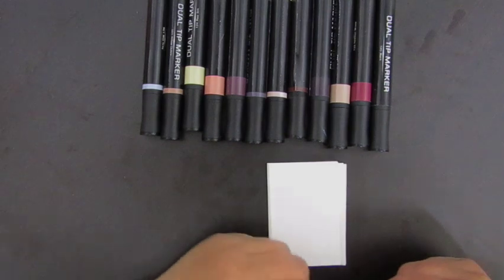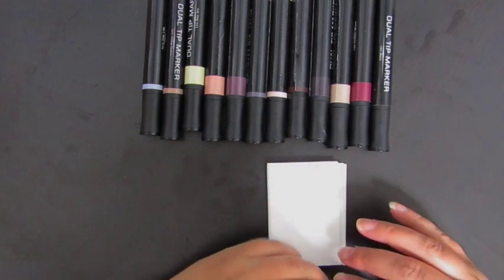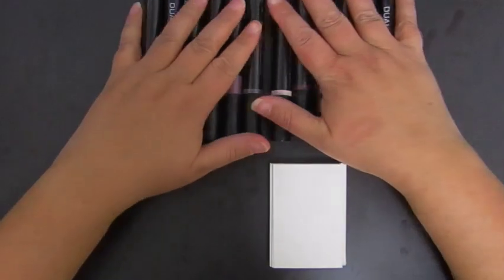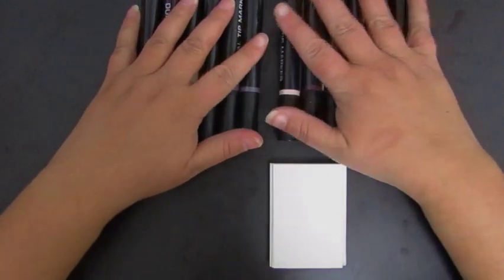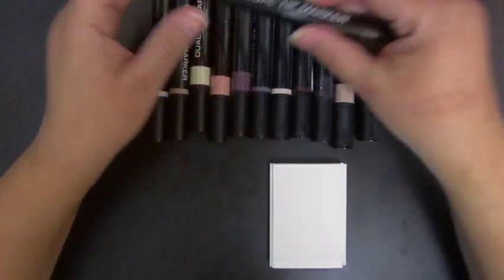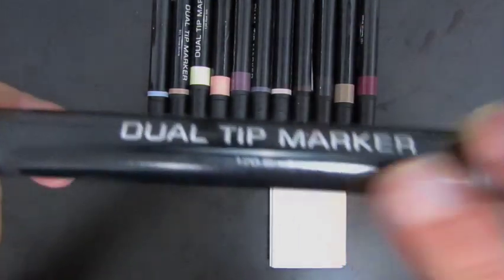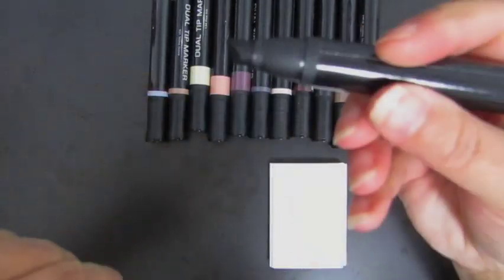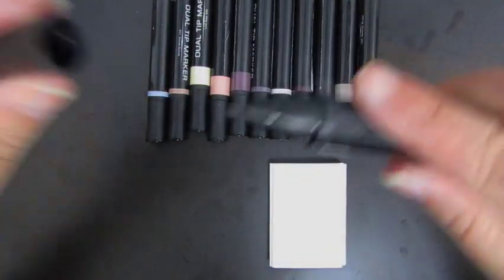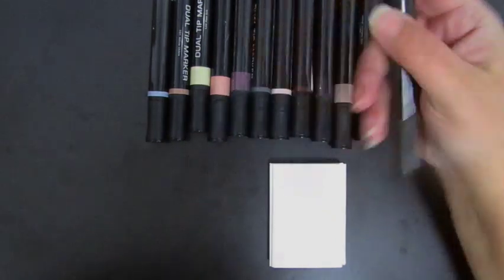Welcome back to my channel. Today I'm going to be swatching another set of markers that I picked up at Five Below. These are alcohol markers, dual tip. They do have a color number and a name on the barrel. They are bull tip and fine tip and they are alcohol-based markers.